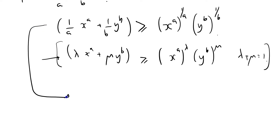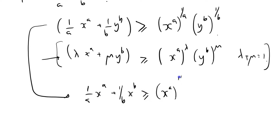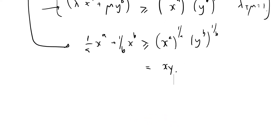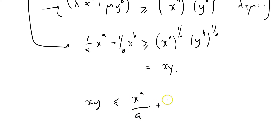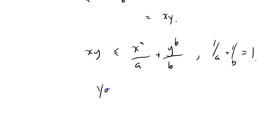So we've got: 1 over A times X to the power A, plus 1 over B times X to the power B, greater than or equal to (X^A)^(1/A) times (Y^B)^(1/B), which equals X·Y. Writing it in the conventional way: X·Y ≤ X^A / A + Y^B / B, provided that 1/A + 1/B = 1. And this is called Young's Inequality.